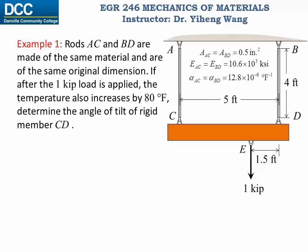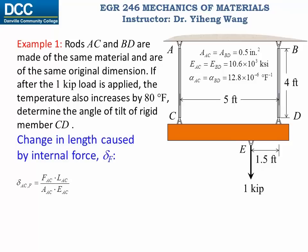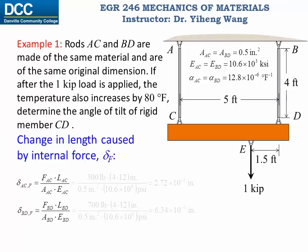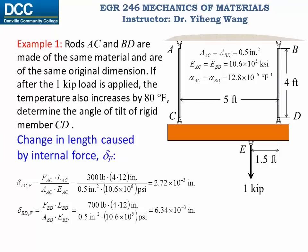Now we need to determine the deformation of rods AC and BD. There are two factors: first, deformation caused by the force, and second, the deformation caused by temperature change. For the deformation caused by force, we use the displacement equation: displacement equals force times length over cross-sectional area and Young's modulus. Keep in mind that in the displacement equation the force must be the internal normal force. In this case the internal force in each rod equals the external force F, so we can substitute all known parameters to calculate the deformation in each rod caused by force.